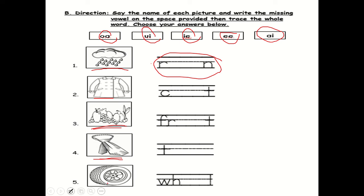Next we have 'wheel'. Now what is the missing vowel in the word wheel?